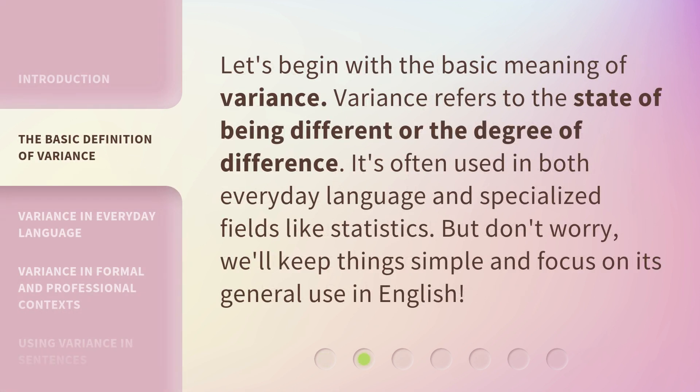Let's begin with the basic meaning of variance. Variance refers to the state of being different or the degree of difference. It's often used in both everyday language and specialized fields like statistics. But don't worry, we'll keep things simple and focus on its general use in English.